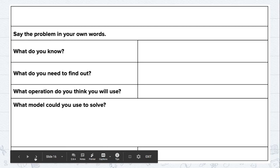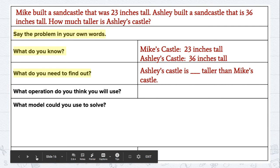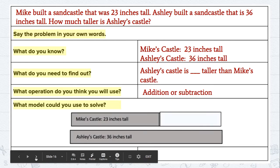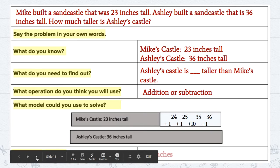This talks about measurement word problems. So here is a blank organizer for the word problems if you need it. You put a word problem in there and you're going to follow the steps. Say it in your own words. Write down what you know. Write down what you need to find out. What operation do you think you will use? So that's adding or subtracting. What model could you use to solve? You can use any model that helps you, and then at the bottom you're going to write the answer.